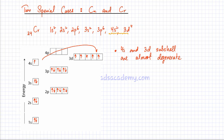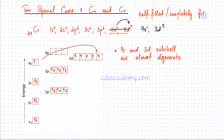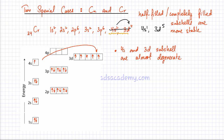Always remember: chromium's electronic configuration is not 4s2 and 3d4. Instead, one electron actually jumps and occupies the 3d orbital, so it is 4s1 and 3d5. Half-filled and completely filled orbitals and subshells are considered to be more stable. In simpler words, remember that chromium has an electronic configuration of 4s1 and 3d5, instead of 4s2 and 3d4.